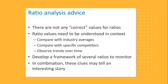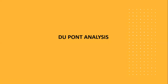Some ratio analysis advice: there is no correct value for ratios, and ratios need to be understood in context. If there's a ratio for a company, you can't just take it at face value — the best thing to do is compare it with industry averages, compare it with specific competitors, and look at what's been happening over a period of time. That will give you a very good indication of how your company is doing. Also, develop a framework of several ratios to monitor — don't just depend on one ratio. In combination, these clues can tell a very interesting story. Looking at a ratio in isolation is never a good idea.